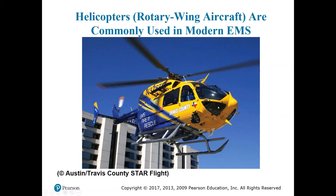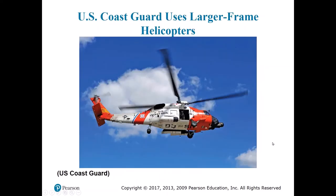Here you can see the Austin Travis County EMS/fire rescue helicopter — a five-bladed rotary aircraft with a tail rotor, a county-run non-commercial system. Here is a Coast Guard Sikorsky — a heavy-bladed aircraft. If you work near points of entry near waterways, you may encounter one of these coming in to assist.